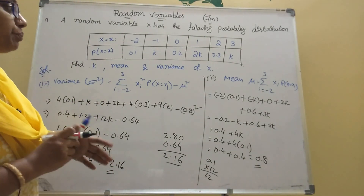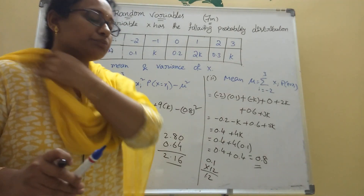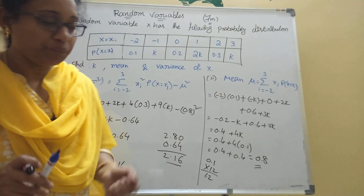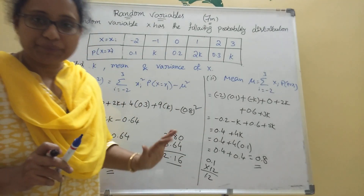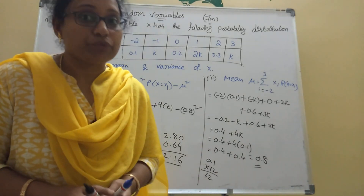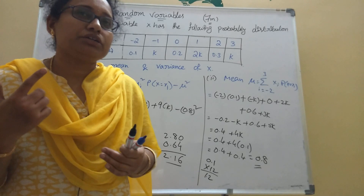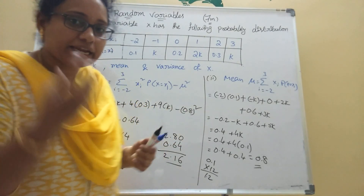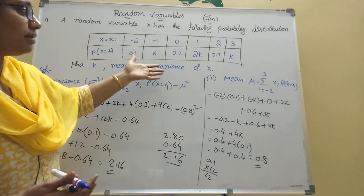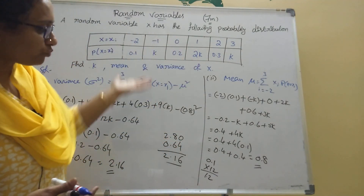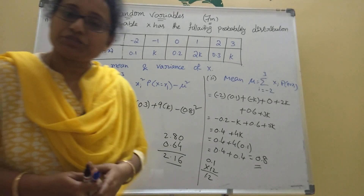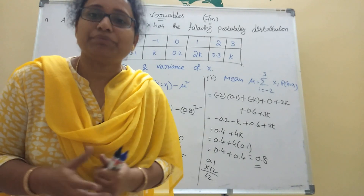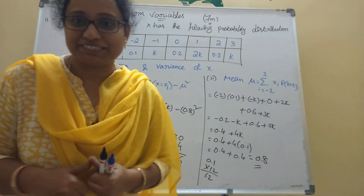This is a very important problem in random variables. There are about seven such models. I will write only the questions in another video. This model is very important — practice it. If k terms appear in a question about probability distribution, it is a random variables problem. If you are new, please subscribe to my channel and share with your friends so they can also benefit. Thank you.